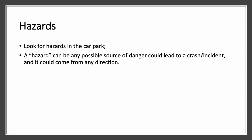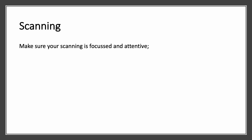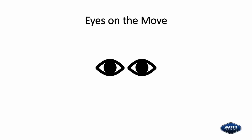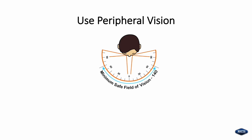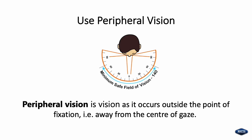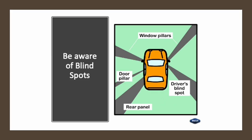Look for hazards in the car park. A hazard can be any possible source of danger that could lead to a crash or incident and could come from any direction. Make sure your learner's scanning is focused and attentive. Learners must keep their eyes on the move and use their peripheral vision. Peripheral vision is vision as it occurs outside the point of fixation, that is away from the centre of gaze. The learner must be aware of their blind spots such as the window pillars, door pillars, rear panel, and driver's side blind spot.